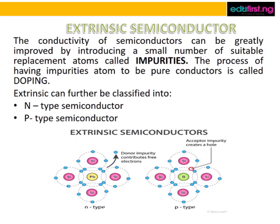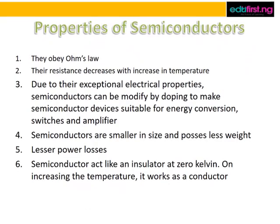Now let's look at the properties of semiconductors — that is, how semiconductors behave. One: they obey Ohm's law. Two: their resistance decreases with increase in temperature. Three: due to their exceptional electrical properties, semiconductors can be modified by doping to make semiconductor devices suitable for energy conversion, switches, and amplifiers. Four: semiconductors are smaller in size and possess less weight. Five: lesser power losses. Six: a semiconductor acts like an insulator at zero kelvin, but on increasing the temperature, it works as a conductor.